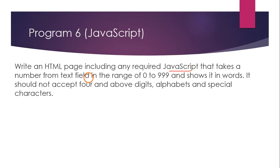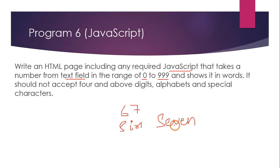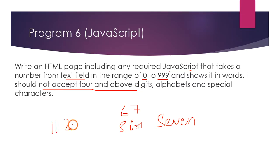Program six uses JavaScript to display a text field where the user enters any number between 0 and 999. Once the user clicks submit, it should display each digit of the number in words — for example, 67 should display 'six seven'. It also validates that the field should not accept four or more digits, and the number should not contain alphabets or special characters.